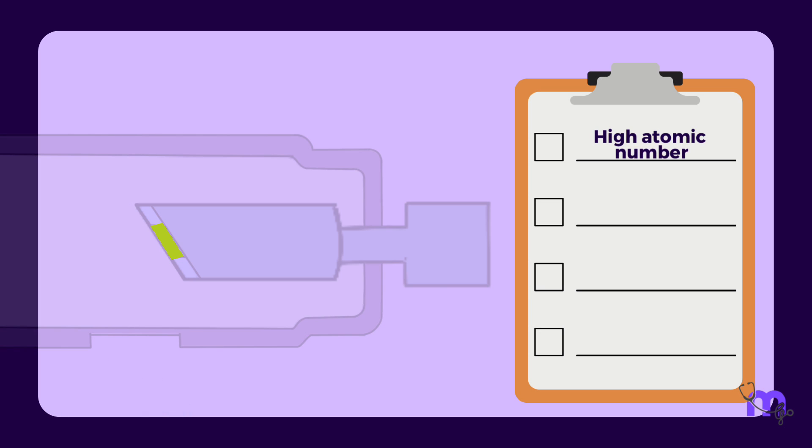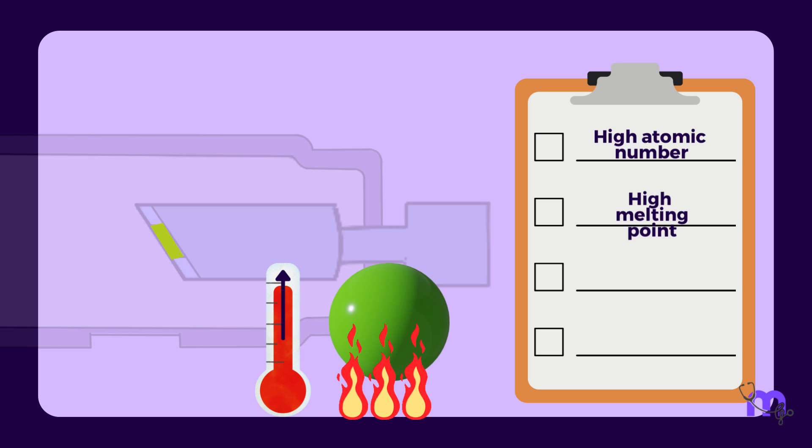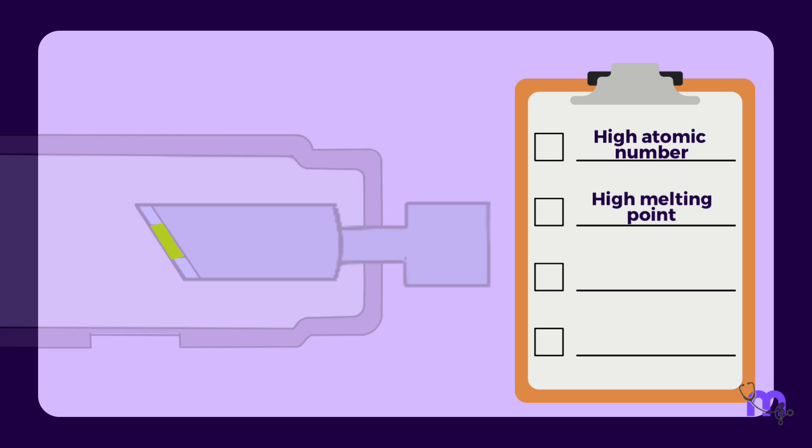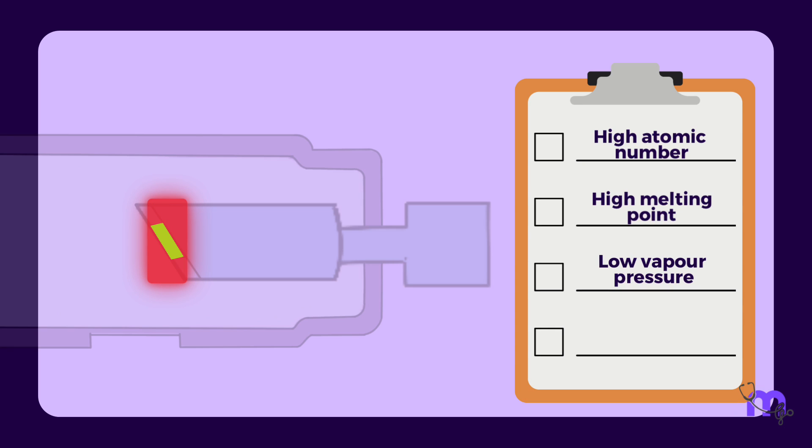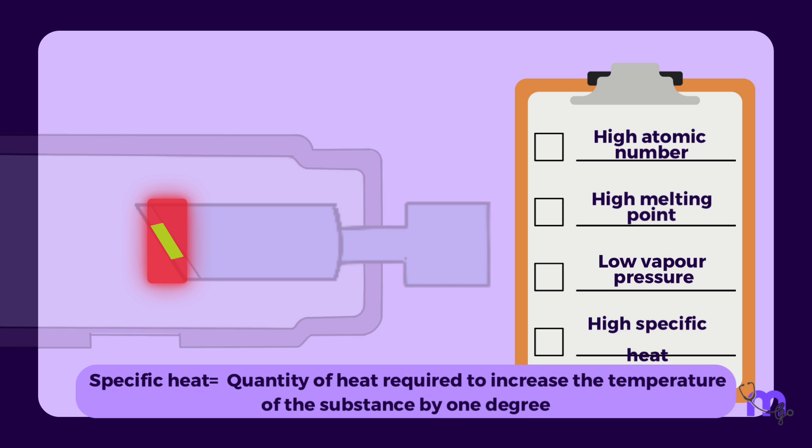Second, it should have a high melting point, which means it doesn't melt at high temperatures. Thirdly, it should have a low vapor pressure, which is the tendency of a material to change into a gaseous state, so that the target material doesn't evaporate at high temperatures. And lastly, the target material must have a high specific heat. This refers to the quantity of heat required to increase the temperature of a substance by one degree. A high specific heat will help aid heat dissipation.